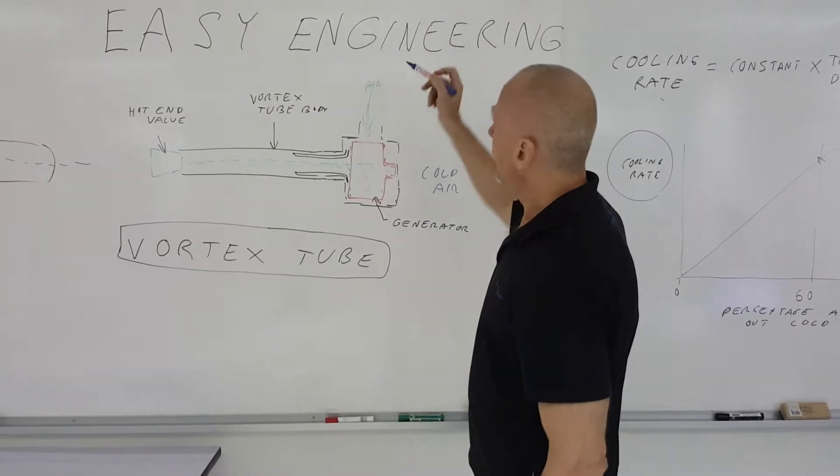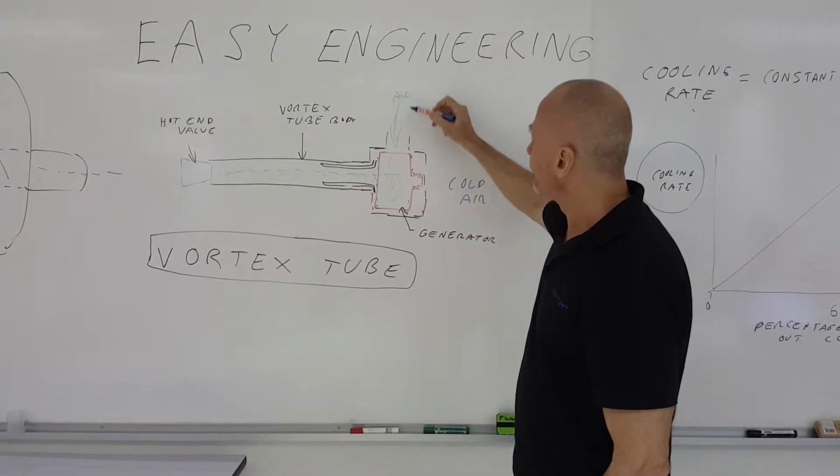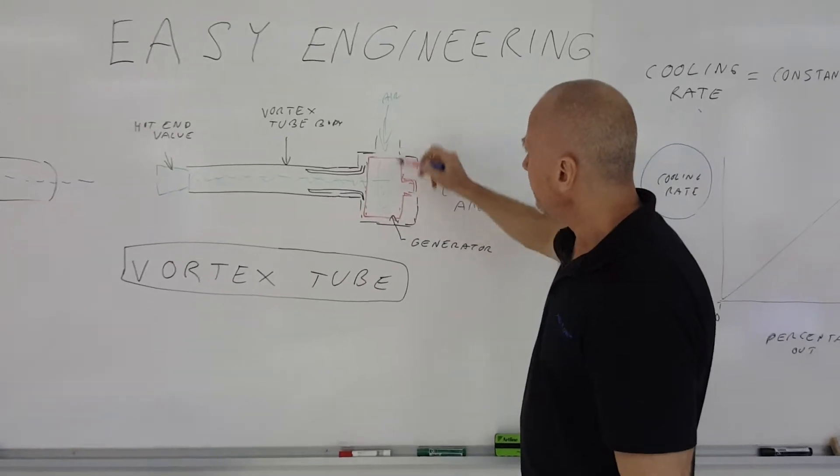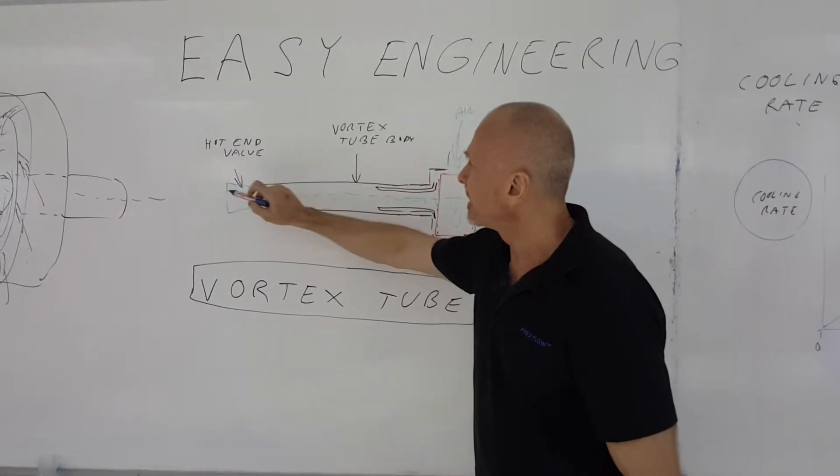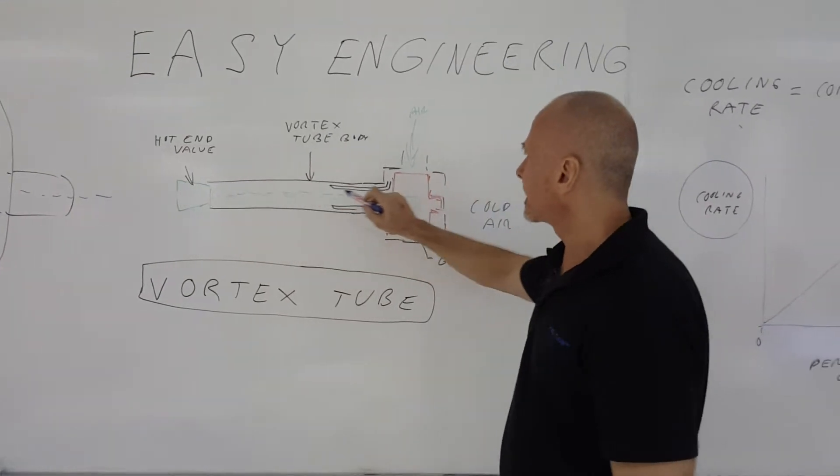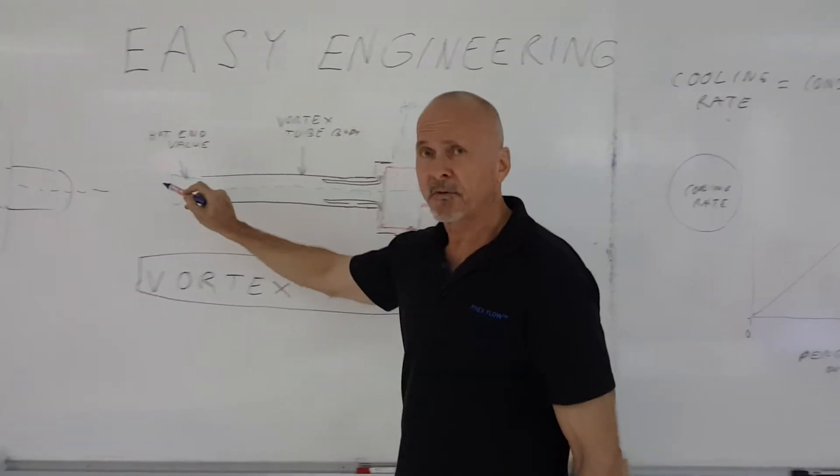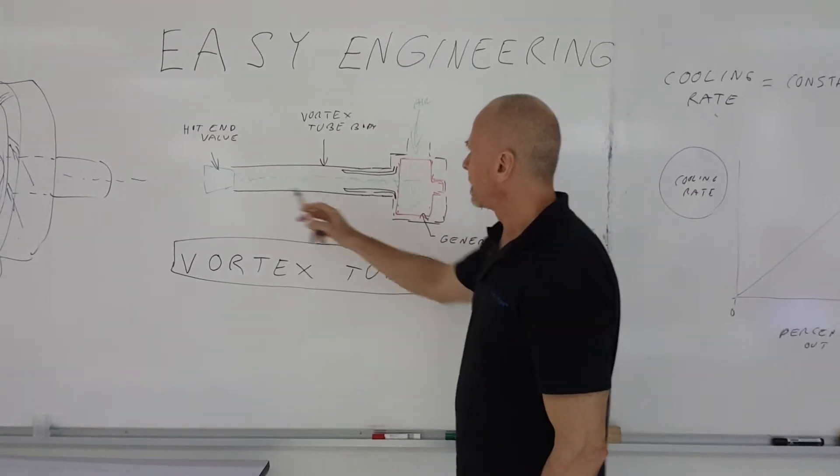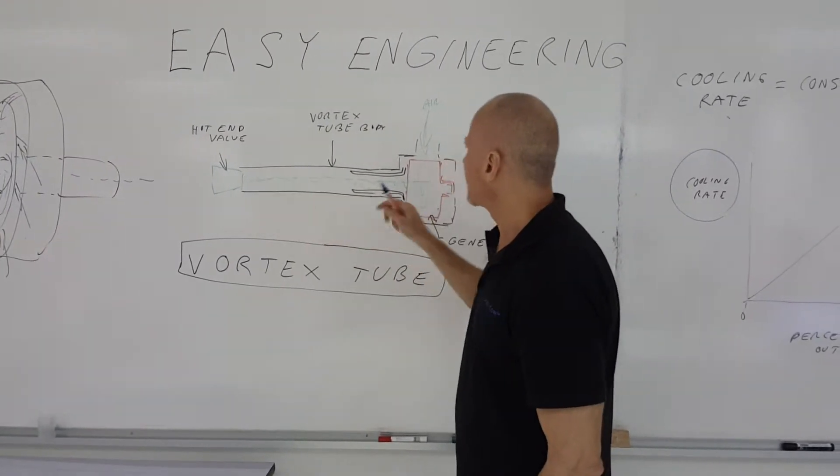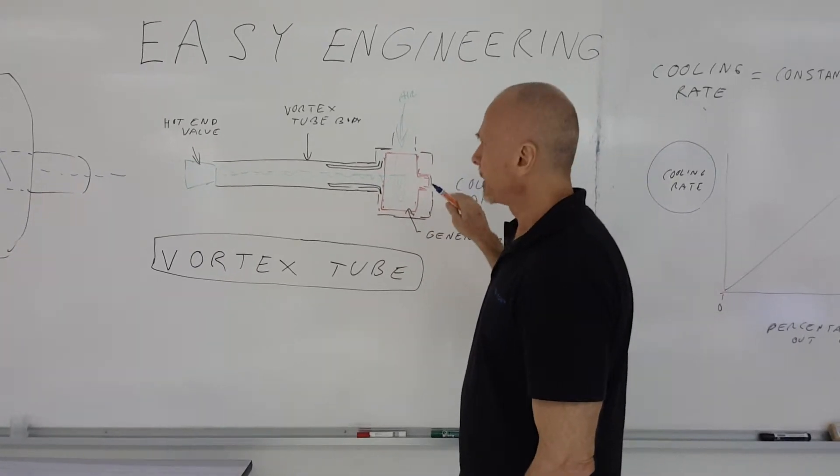Now, as a quick review, a Vortex Tube takes compressed air, goes into the body, into the generator, which spins the air one way, then spins itself back inside itself the other way. One end gets very hot, one end gets very cold. The amount of opening at the hot end determines how much flow and what the temperature is at the cold end.